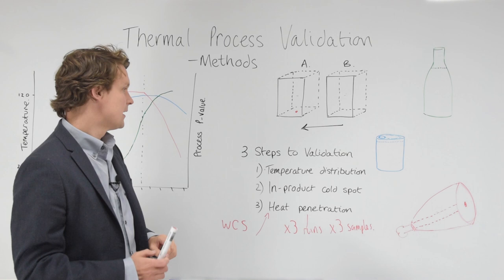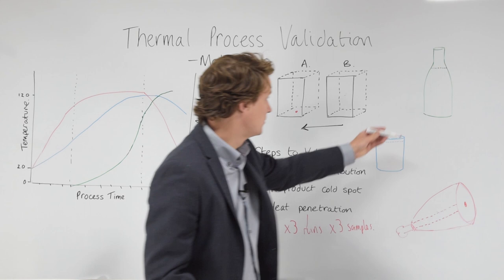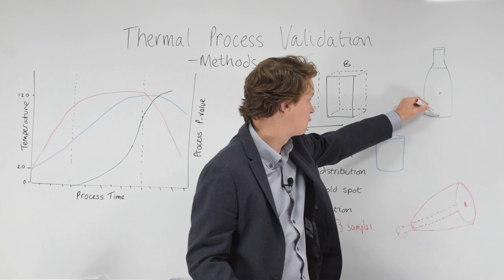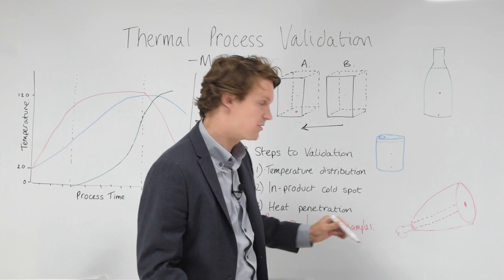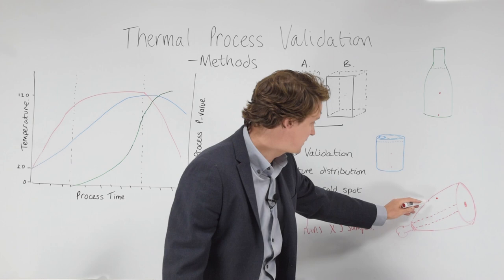We also need to understand the in-product cold point, or cold spot, because the heating on the product could vary. For example, this bottle could be slow as heating here, in the middle, or it could be at the bottom here. Same with a can. Maybe you'd have two points where you'd need to investigate. And our ham, our leg of ham, our joints, how do we know whether the flesh is the slowest point of heating, or next to the bone?